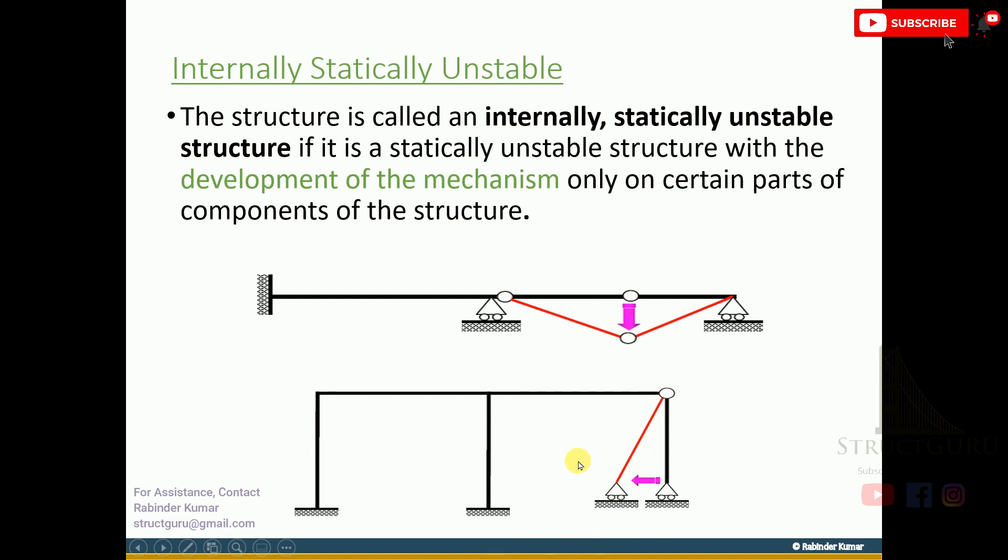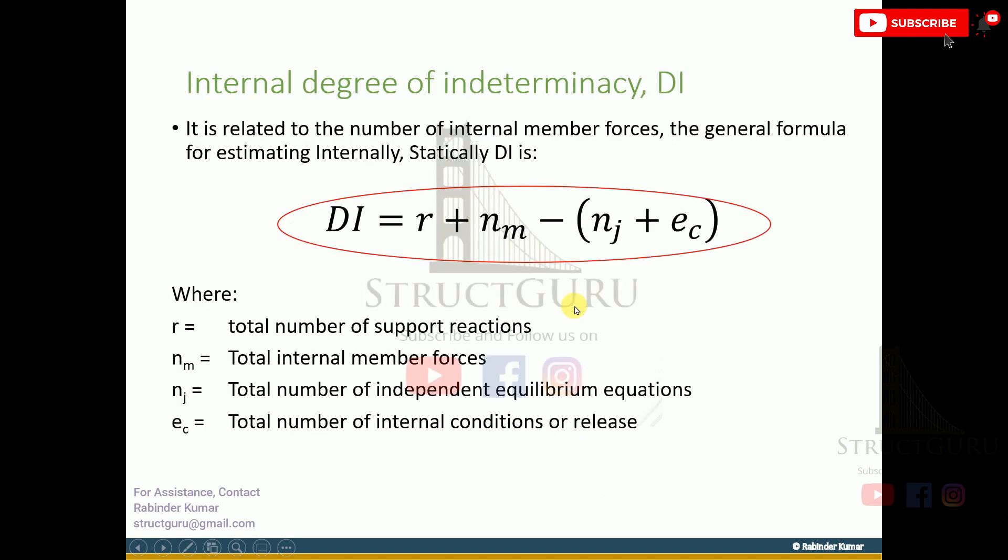Both structures are externally stable but internally unstable due to the arrangement of the members. This is the generalized formula for estimating internal static degree of indeterminacy: DI refers to degree of indeterminacy, r is total number of support reactions, nm refers to member forces, nj refers to total number of independent equilibrium equations, and ec refers to the total number of internal conditions or internal releases.